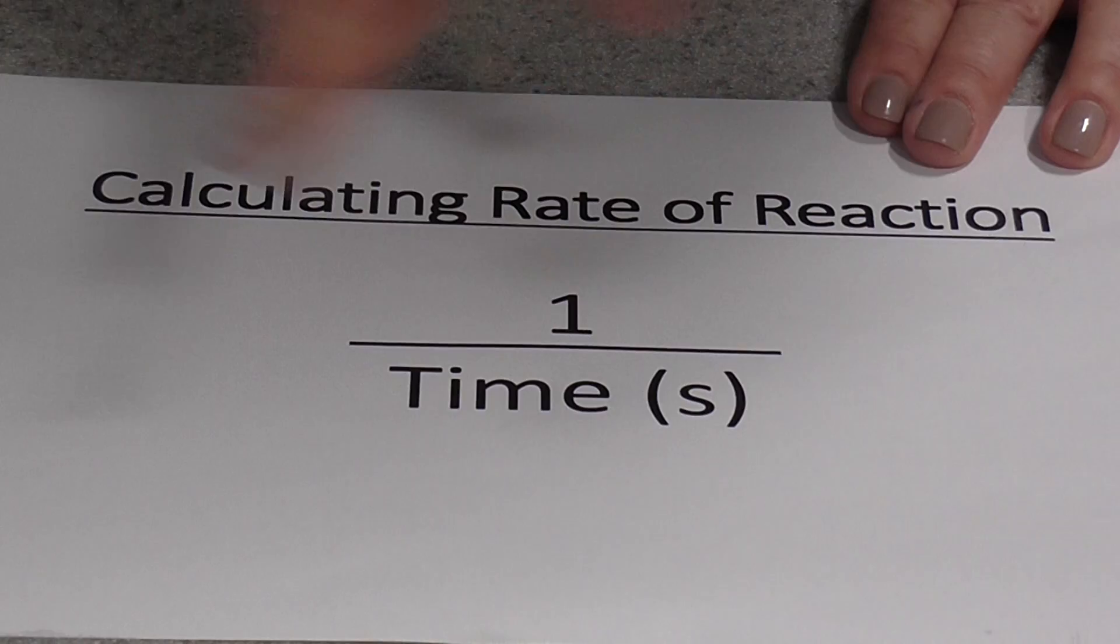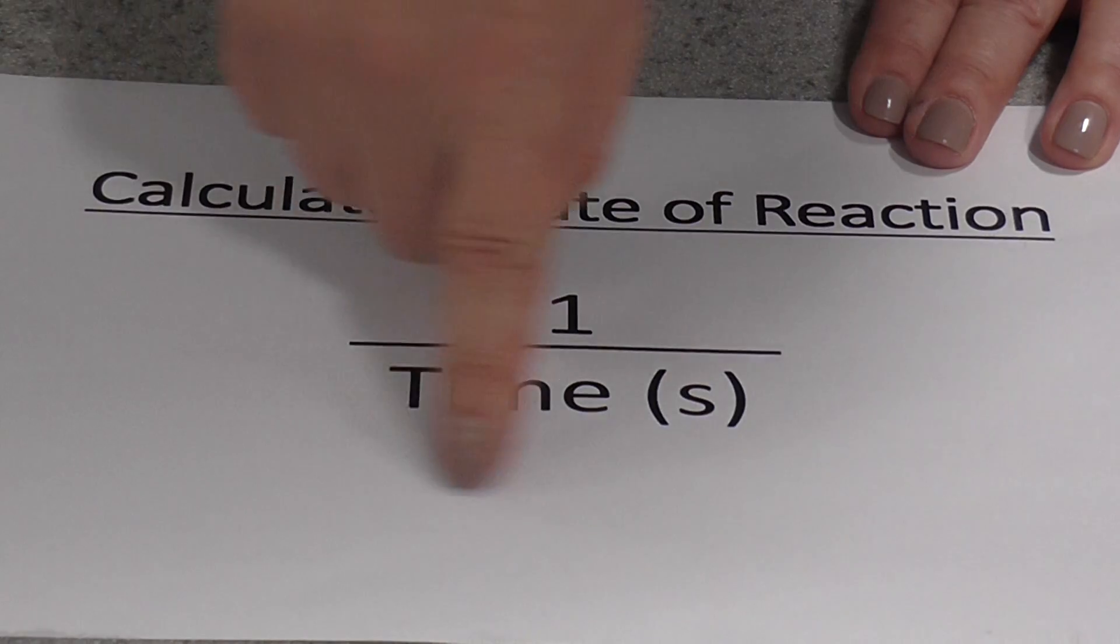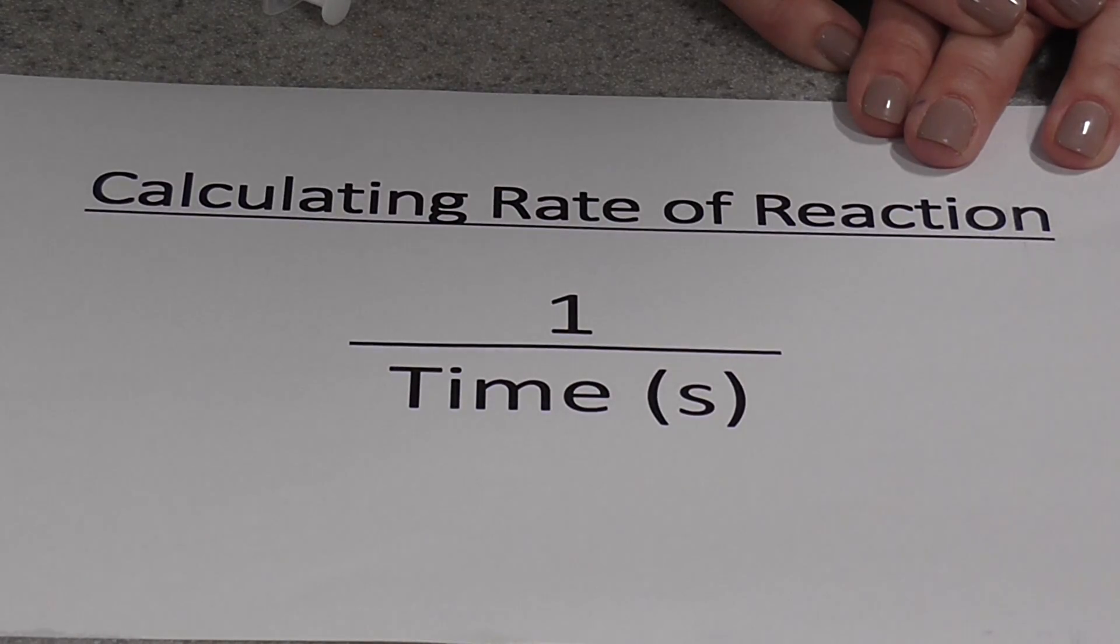Because we were timing how long it took for a complete reaction to take place until the X was visible, to actually work out the rate of reaction, we will just do one, that means the whole reaction, divided by the time in seconds, and that will actually give us a rate.